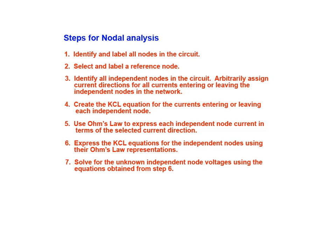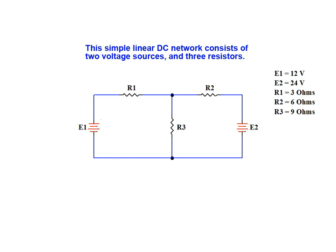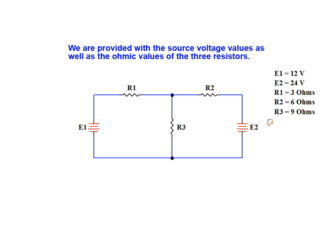We then move on to solve for the unknown independent node voltages using the equations obtained from step 6. Lastly, we use the calculated independent node voltages along with the Ohm's law representation of the currents for the independent nodes to solve for voltages and currents throughout the network. This simple linear DC network consists of two voltage sources and three resistors. We are provided with the source voltage values as well as the Ohmic values of the three resistors in the network.